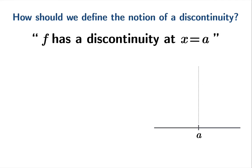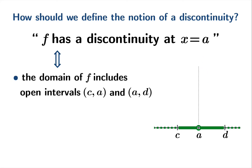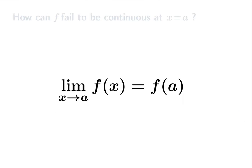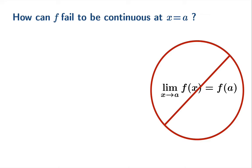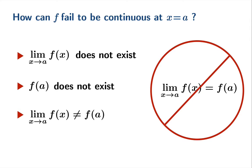This may not be a standard definition, but we're going to declare that f has a discontinuity at the argument a if and only if the domain of f includes open intervals to the left and the right of the argument, so that we can at least sample function values nearby in order to give the limit a sporting chance of existing. And then of course we will say that f must not be continuous at that argument — the limiting value fails to agree with the value of the function at a. So there are three possibilities: the limit fails to exist, the function value fails to exist, or the two exist but they just don't agree. All the previous discussion declared was that you should at least be able to sample nearby function values near a. The limit might or might not exist, but at least you can sample values of the function to decide one case or the other.